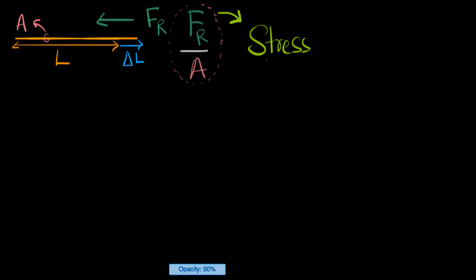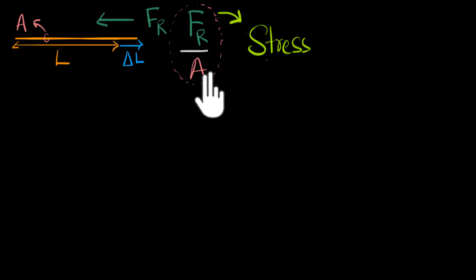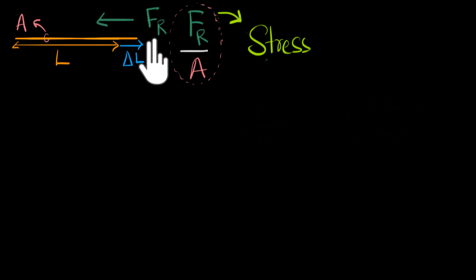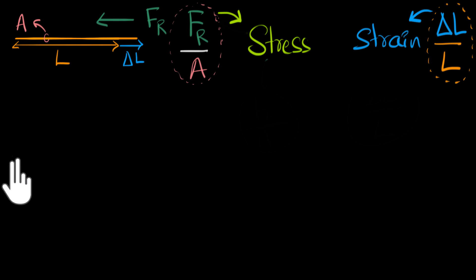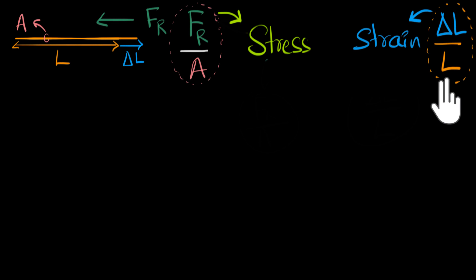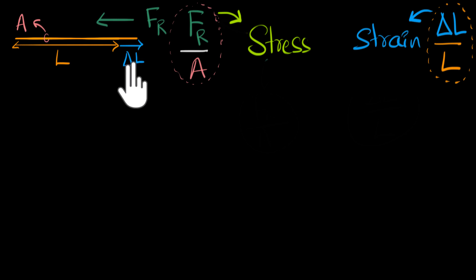From this, we define two new quantities. One we call as the stress, which is defined as the restoring force per unit area — the quantity that tells us how quickly the material tries to snap back to its original shape. And the second quantity was strain, which is the change in length per length, or relative change in length, which tells us how much the material has been deformed.